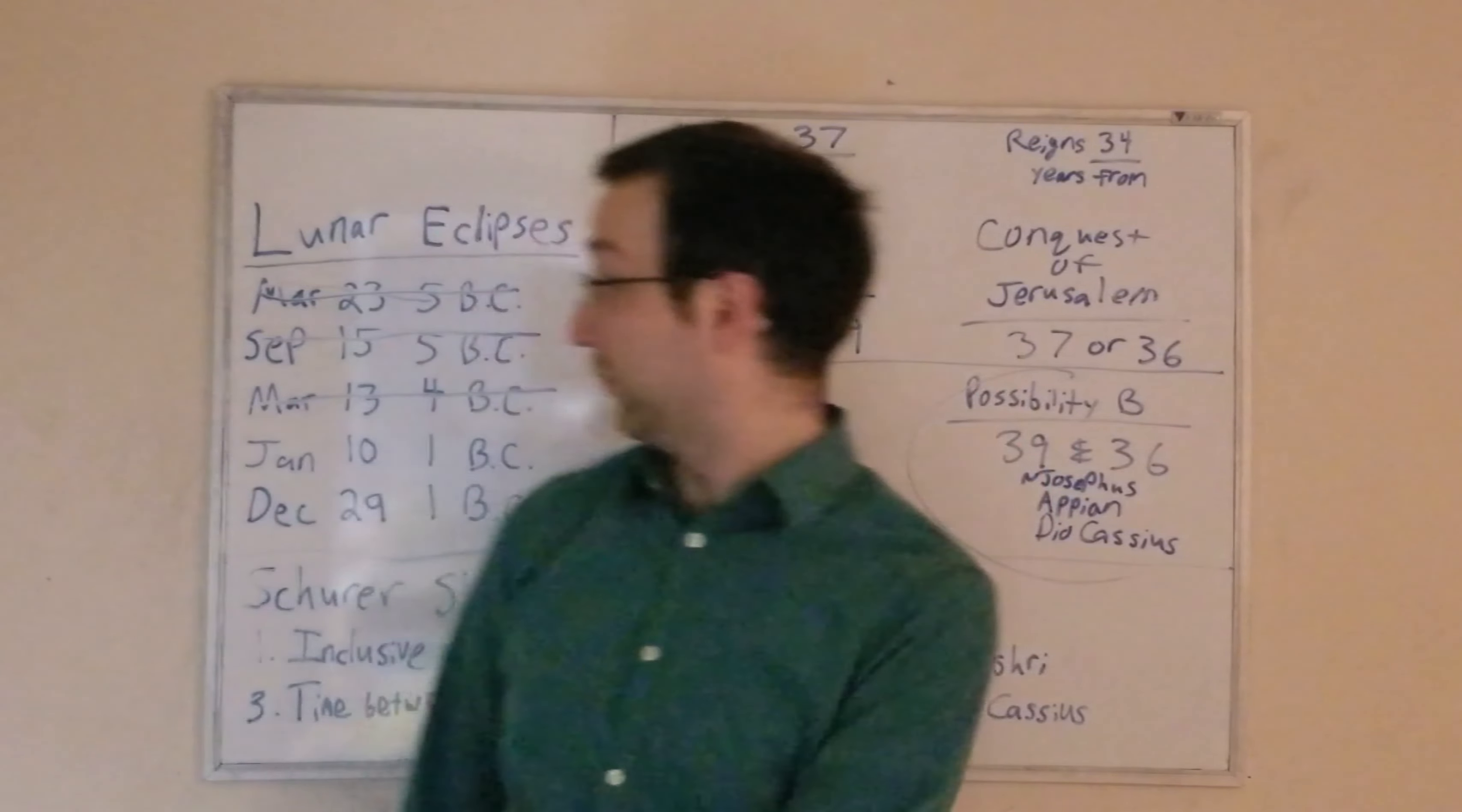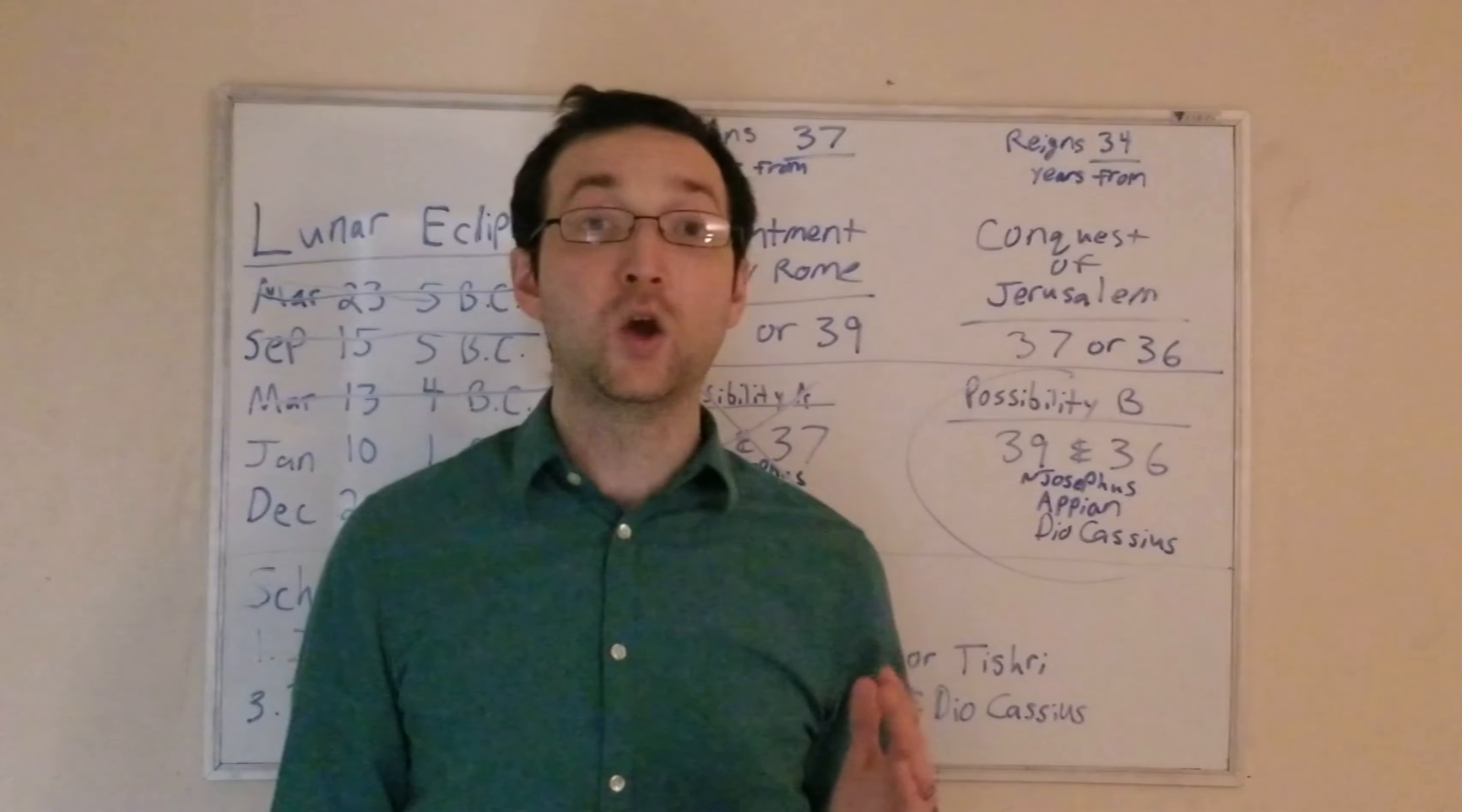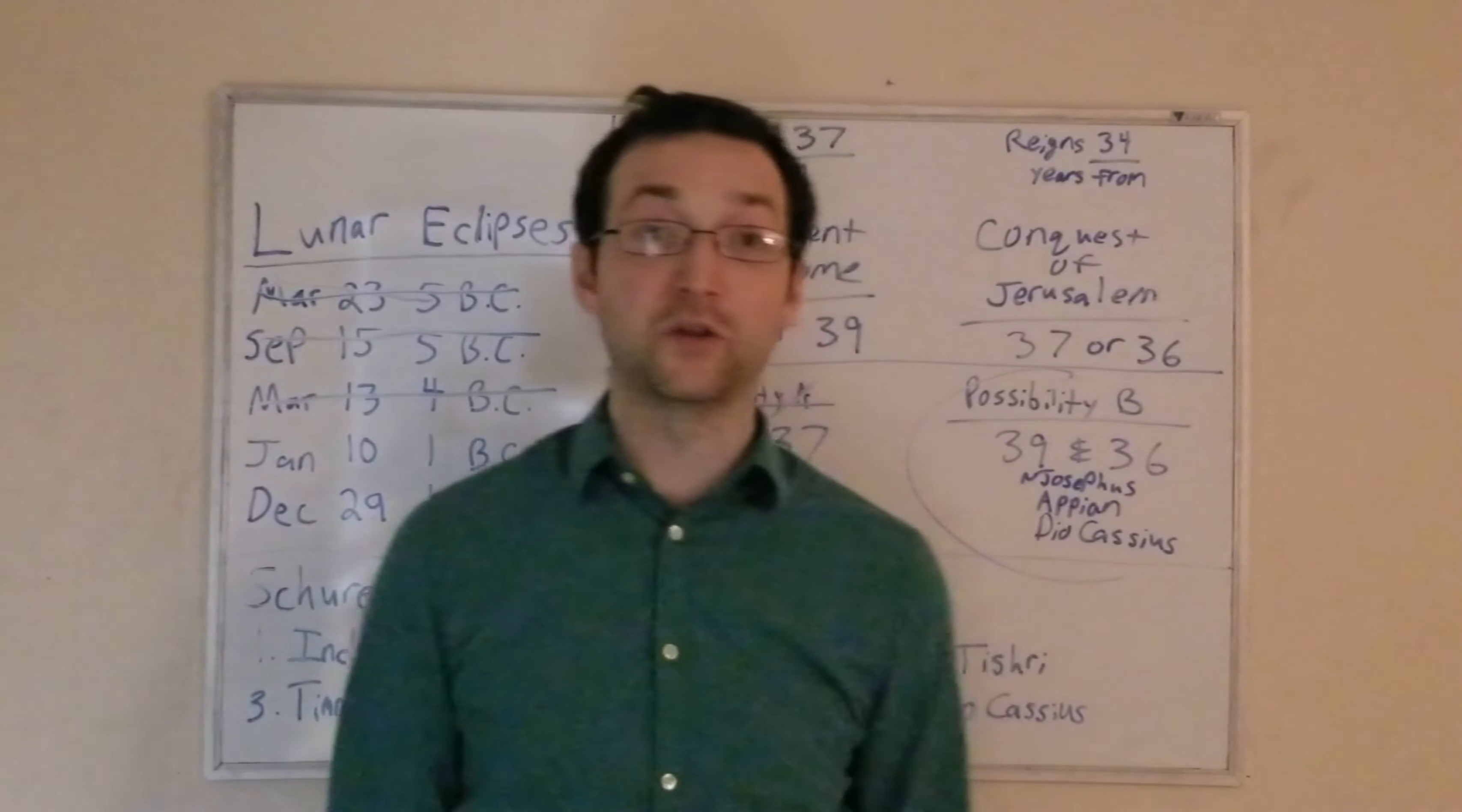Year 37 goes from the spring of 2 BC to the spring of 1 BC. That would mean that this eclipse would be consistent with Herod dying in the 37th year of his reign, and this eclipse would be consistent with Herod dying after having reigned 37 years in his 38th year.